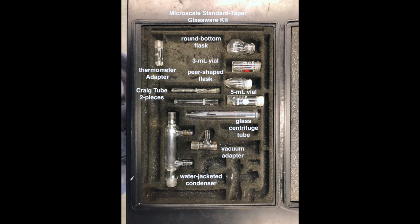In the upper right you have the reaction flask which includes the round bottom flask, the 3 and 5 milliliter conical vials, as well as the pear-shaped flask.